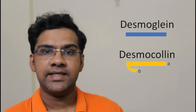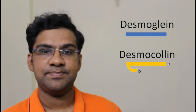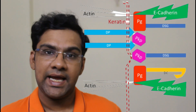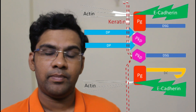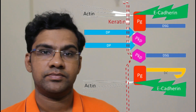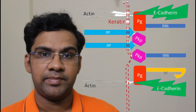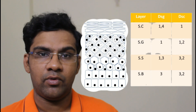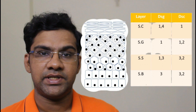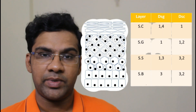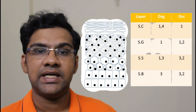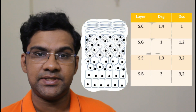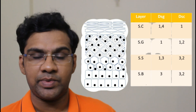Desmocollin contains two splice isoforms: a shorter tail called the b isoform and a longer tail called the a isoform. Desmoglein and the a tail of desmocollin bind with plakoglobin and plakophilin of the outer plaque near the plasma membrane. There are four types of desmoglelins: types 1 and 4 are predominantly present in the superficial layers, type 3 is present in the basal and suprabasal layers, and type 2 is mostly present in cardiac and myoepithelial cells.